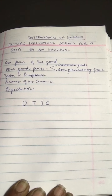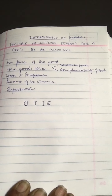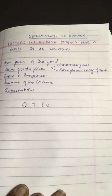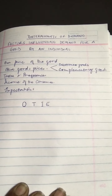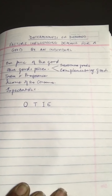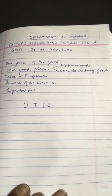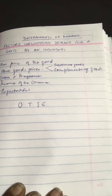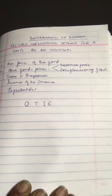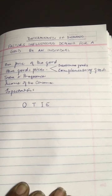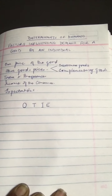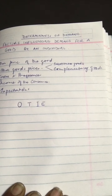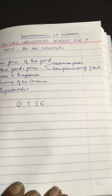With a rise in the price of a substitute, the demand for a given good rises. So there is a positive relation between the price of a substitute and the demand for a given good. This can be shown on a diagram with price of Pepsi on the y-axis and demand for Coke on the x-axis.